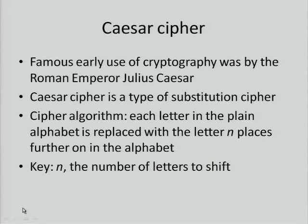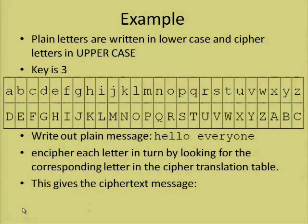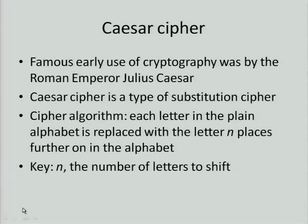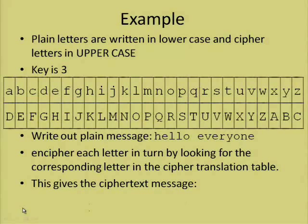Here's an example. In this talk, the plain letters are given in lowercase and the cipher letters are given in uppercase — that's a convention. Here, the key is 3. So if you look, A maps to D, which is 3 places on. B maps to E. C maps to F. And so on.